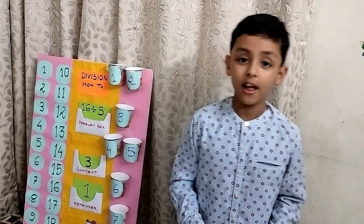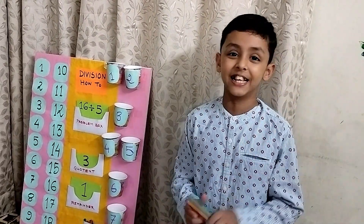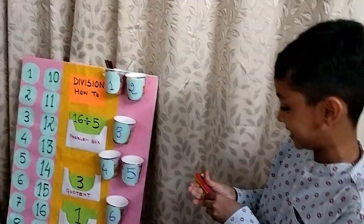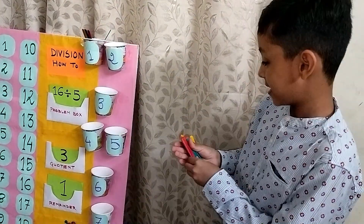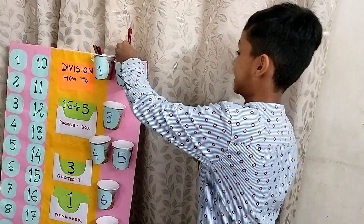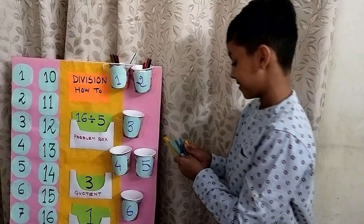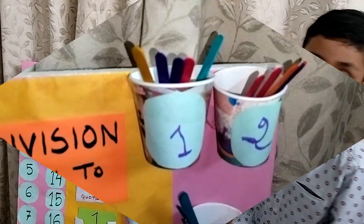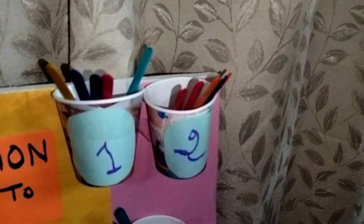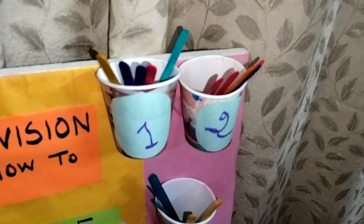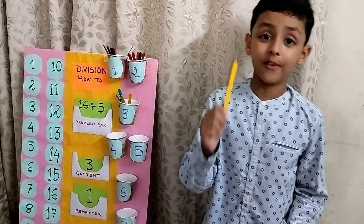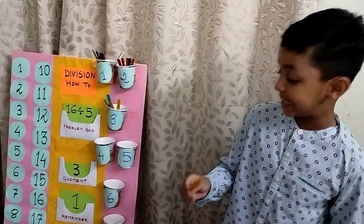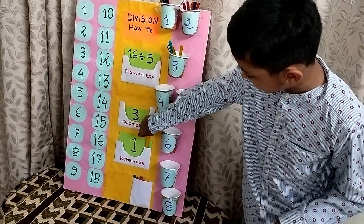Here goes 5 sticks in the first box, five sticks in the second box, then five sticks in the third box. See friends, five sticks are in each box. I have only one stick left in my hand — this one stick will go in the remainder.